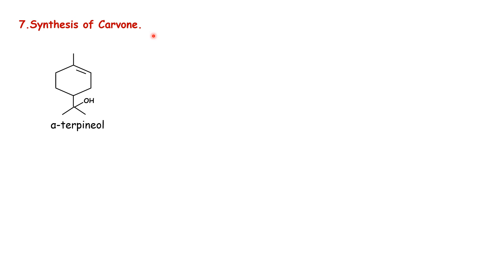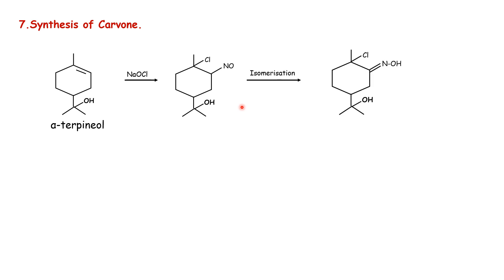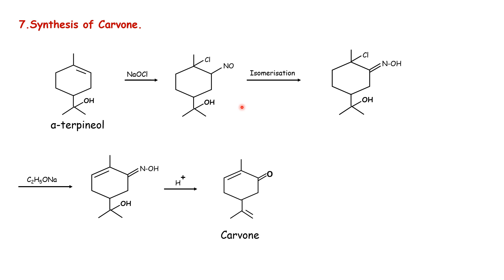The structure of carvone is then confirmed by synthesis. The starting material used is alpha-terpineol, which is another terpenoid. Alpha-terpineol is treated with sodium hypochlorite to get an addition product, which upon isomerization and further treatment with sodium hypochlorite gives a product which upon protonation gives carvone. This is the synthesis of carvone and the structure of carvone is confirmed by synthesis.